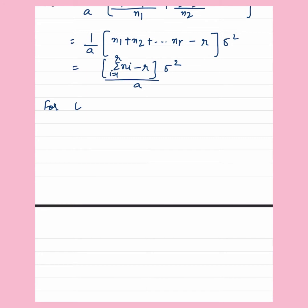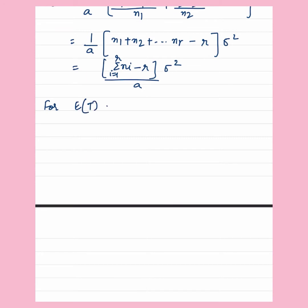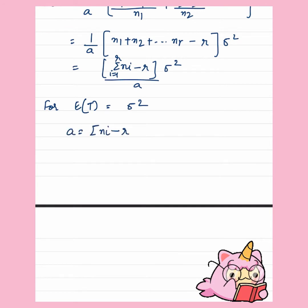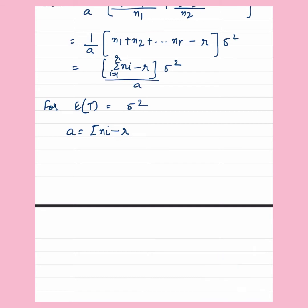For T to be an unbiased estimator of sigma squared, we note that A has to be equal to summation from i equals 1 to r of (Ni minus r). This question is solved.